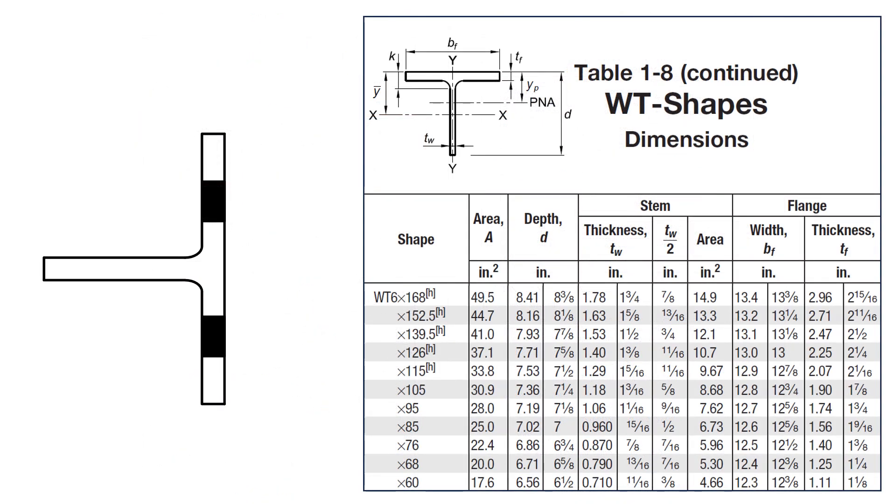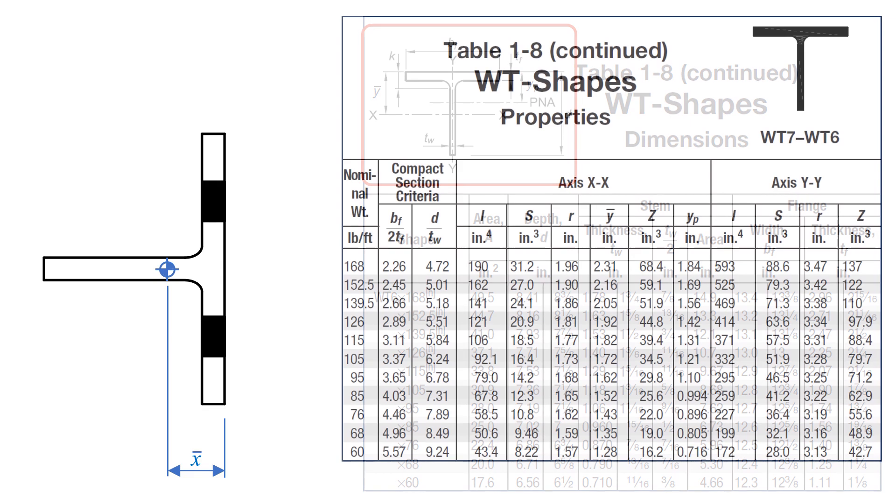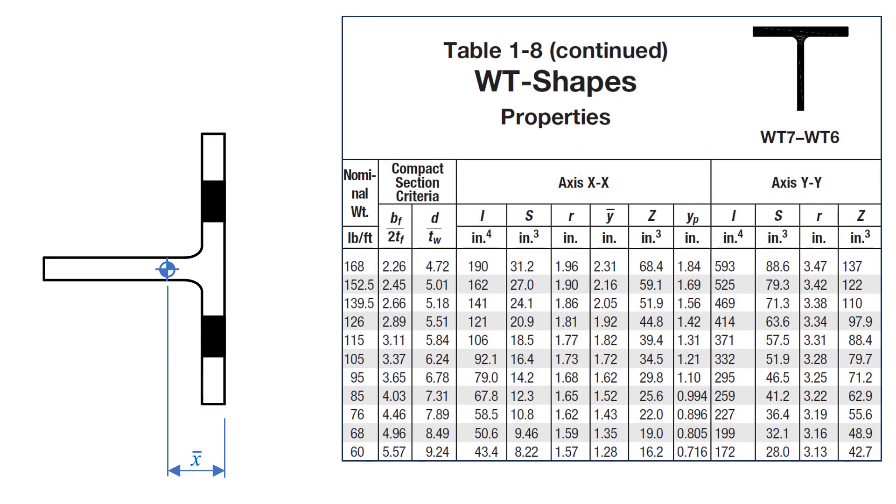In our shear lag reduction equation, u equal to 1 minus x̄ over L, x̄ is a connection eccentricity, and it is taken as the distance from the centroid of the tension member to the faying surface of the joint. However, when we look at table 1-8 of the manual, we see that that distance from the outer surface of the flange to the centroid of the section is tabulated as ȳ. So when we pull that value out of the manual, we pull the value of ȳ equals 1.62 inches and we use that as x̄ in our shear lag equation.